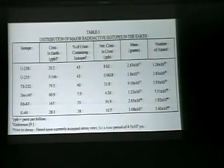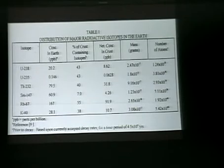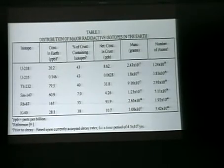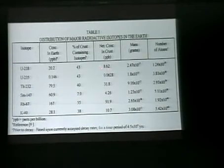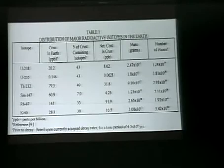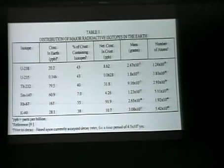Looking at these radiometric isotopes — uranium-238, uranium-235, thorium, samarium, rubidium, and potassium — these are the major isotopes used for dating. I'm dealing with the known amounts in parts per billion in the crust, the percent of those isotopes contained in a crustal sample, the net concentrations in parts per billion, the masses in grams for each amount, and the number of atoms of each type derived from that. I need to deal with individual atoms because it's individual atoms that get affected, so for the purposes of calculations we need to know those numbers.